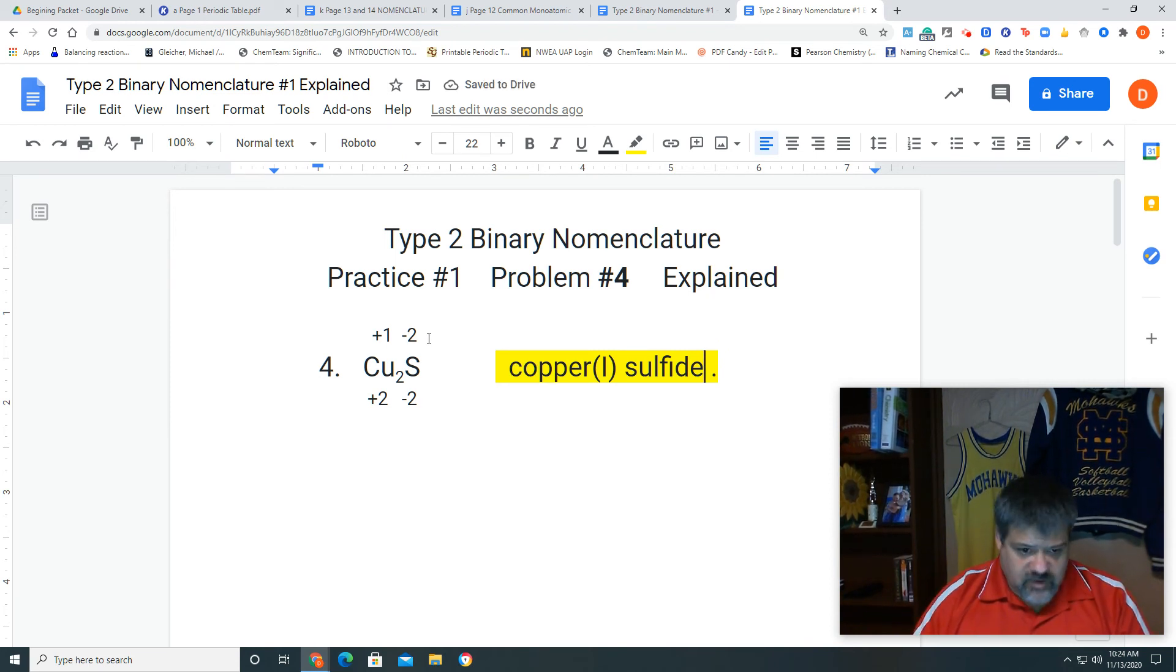Now, again, we can do the shortcut on this one, too, because the charge of sulfur was a negative 2. We have two coppers, so that means whatever the subscript for sulfur is, in this case 1, would be our charge for copper, that reverse crisscross.